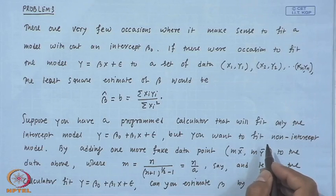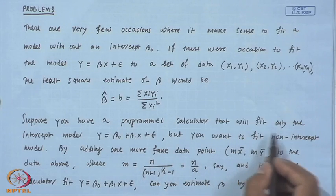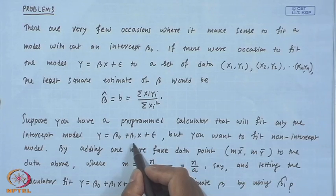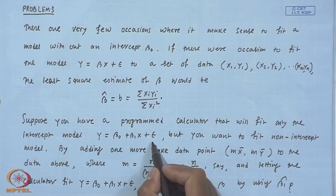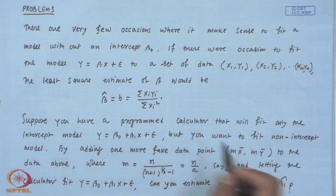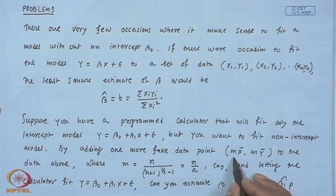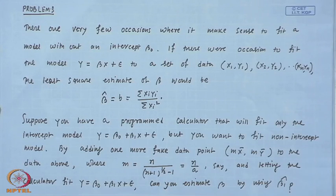The second part is: suppose you have a programmed calculator that will fit only the intercept model Y = β₀ + β₁X + ε, but you want to fit the non-intercept model. The question is, by adding one more fake data point, say (mX̄, mȲ), where m is a function of n, and letting the calculator fit the intercept model, can you estimate β using β̂₁?